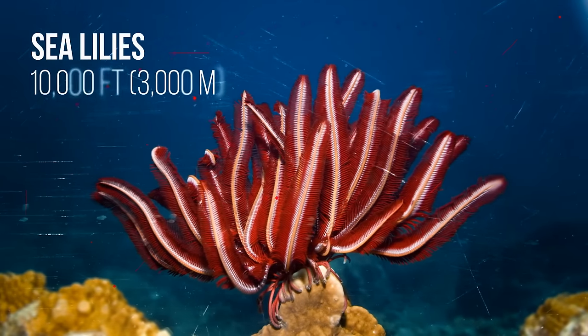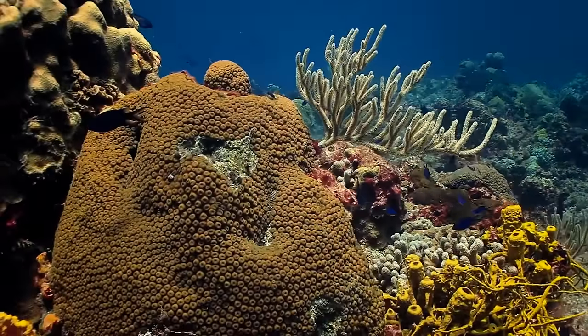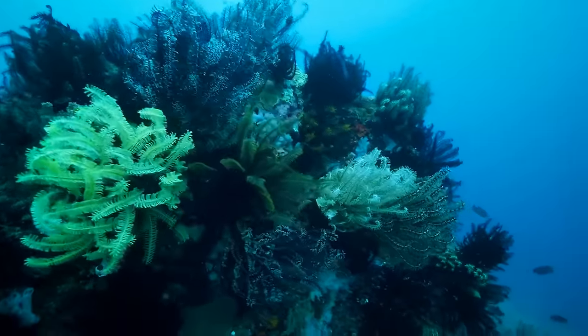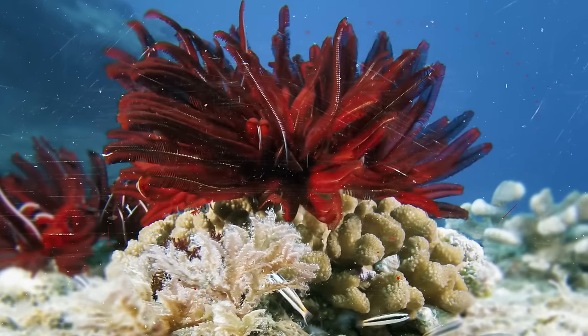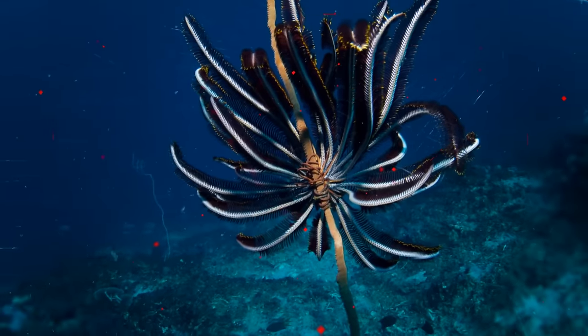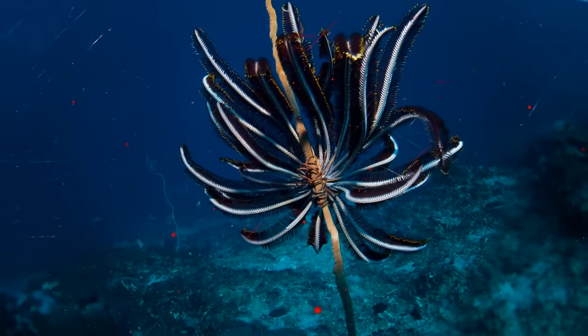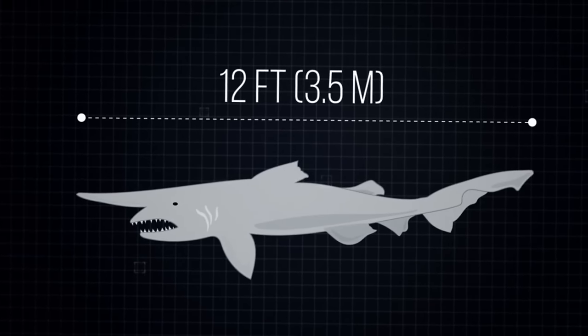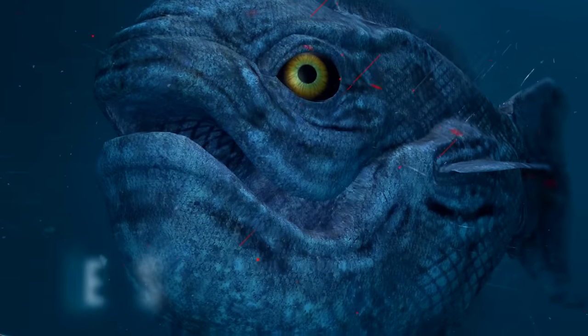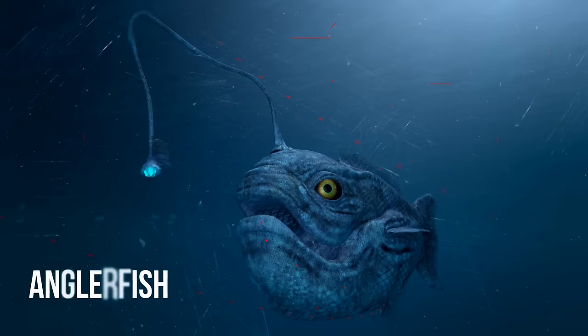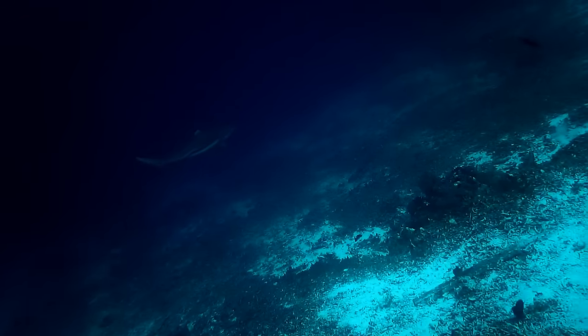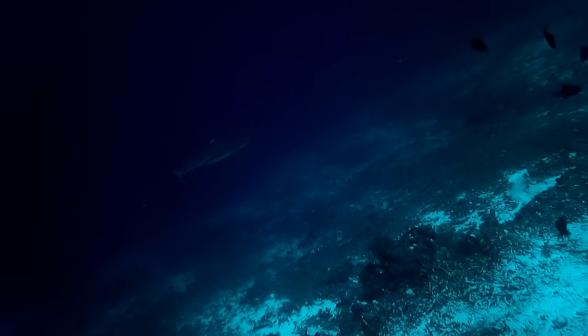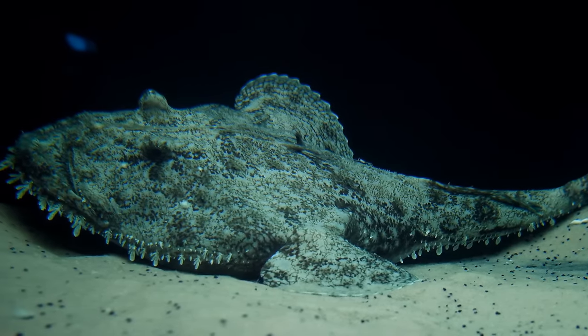Sea lilies live some 10,000 feet underwater. They got their name because they look like flowers. Except they're not plants, but animals. Don't be fooled by their stems and leaves. Those are body parts equipped with nerve endings to detect food around them. Goblin sharks are probably some of the most weird-looking sharks that live at the bottom of the ocean. They can grow up to 12 feet long and have a very unusual snout. Now, take a look at the anglerfish. It has a bioluminescent blob on its head to attract prey and navigate its way around the dark ocean floor. It's a natural flashlight that never needs new batteries. It's only the females that have these flashlights, though.